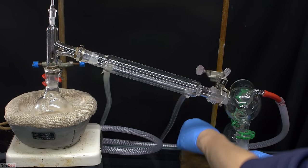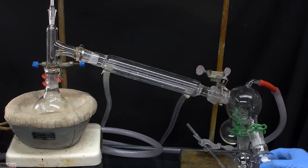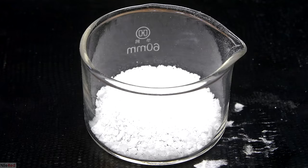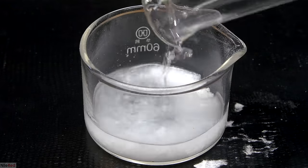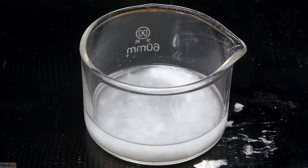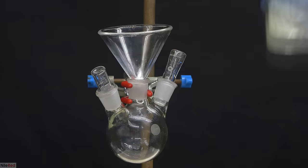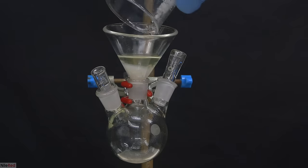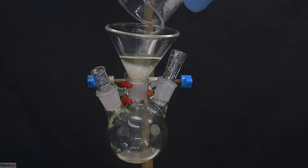Today we're finally making 1-octen-3-ol, which is something I've been trying to make for a while now. It's sometimes used as an artificial mushroom flavor, but what I find interesting is that it's a chemical attractant for biting insects. It's naturally present in both human sweat and breath, and this is one major way for insects like mosquitoes to find us.